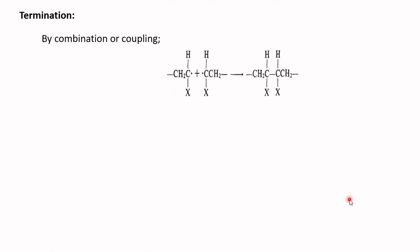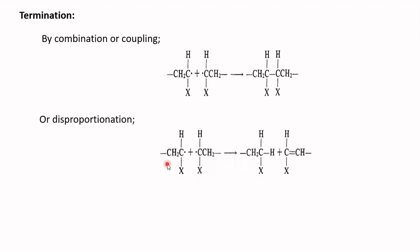Termination takes place in two different ways. The first is termination by combination or coupling, where two chain radicals simply combine together to terminate the reaction. The second way is termination by disproportionation, where one chain radical abstracts the beta hydrogen from another chain radical to terminate the reaction.